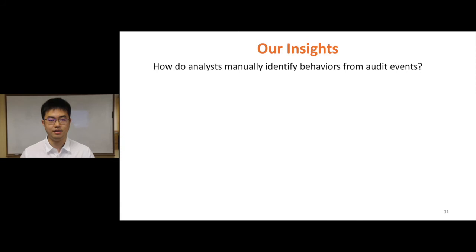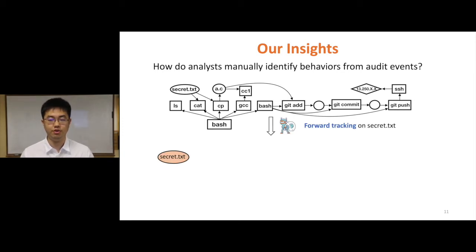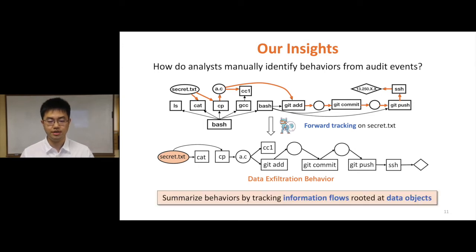We then study how analysts manually identify behaviors from audit events. This figure shows the graph of the data exfiltration behavior. To understand the high-level behavior, analysts perform forward tracking based on the root data object — the secret.tsd file. After tracking information flows starting from this file, analysts can find that the secret data is leaked, confirming a data exfiltration behavior. We therefore propose our second insight: behaviors can be summarized by tracking information flows rooted at data objects.